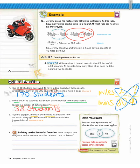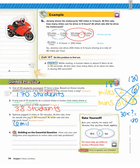90 times 2 is 180. We want to know: 30 times what will give us 180? We do 180 divided by 30, which is 6. So 30 times 6 is 180 — those are the same, so that works. She is expected to jog six miles in 90 minutes.